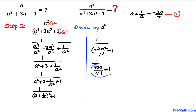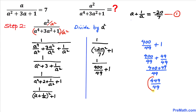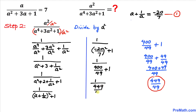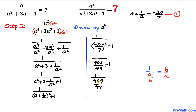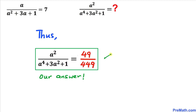Now let's simplify the denominator: 400 over 49 plus 1 equals 449 over 49. So the expression becomes 1 divided by 449 over 49, which by the reciprocal property equals 49 divided by 449. Thus our final simplified answer is 49 divided by 449. Thanks for watching and please don't forget to subscribe to my channel for more exciting videos.